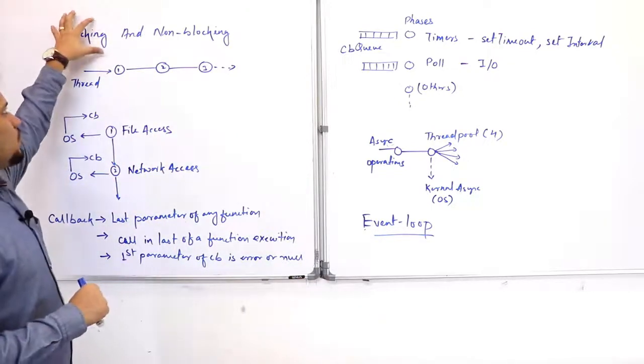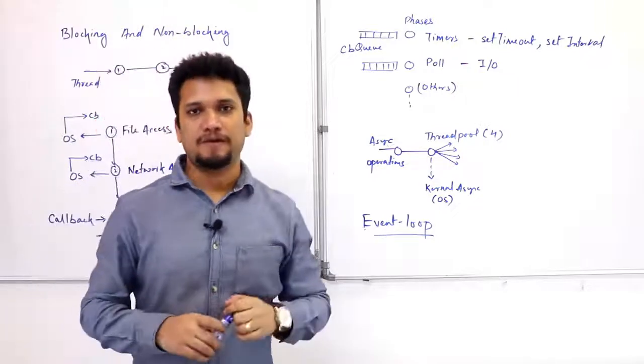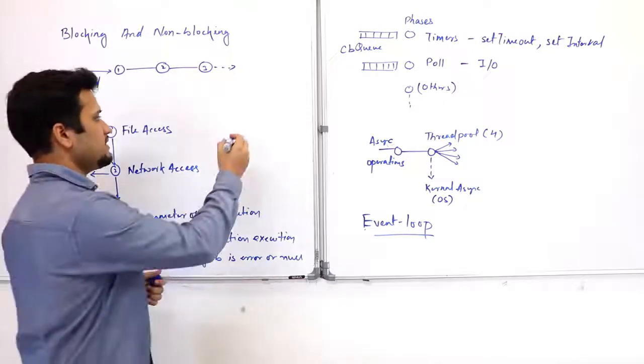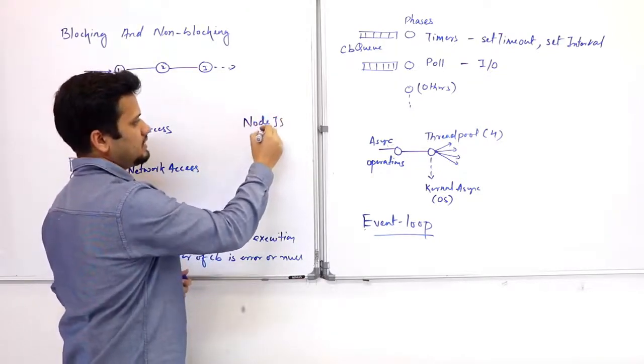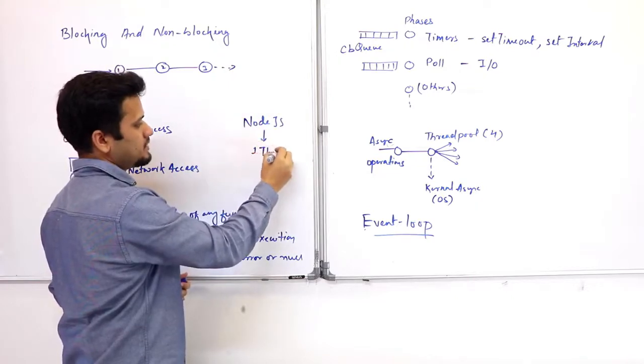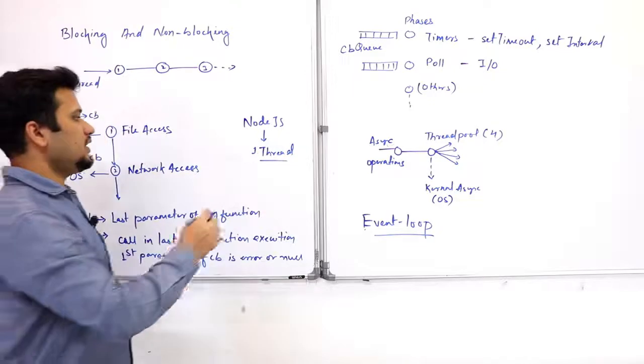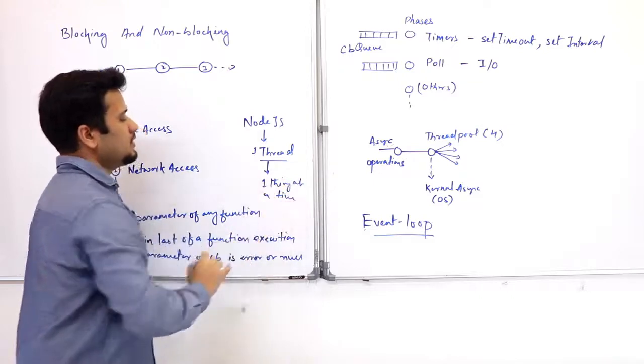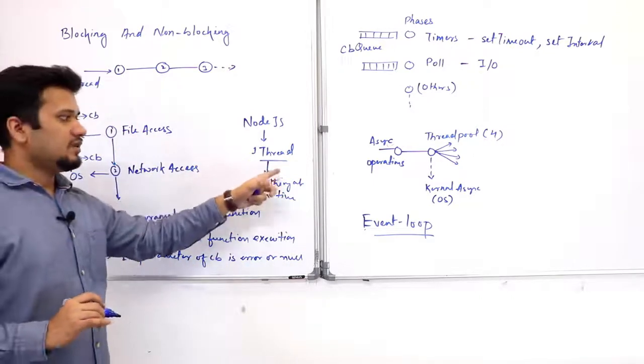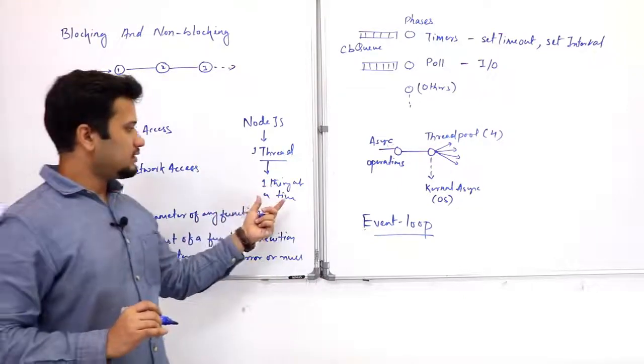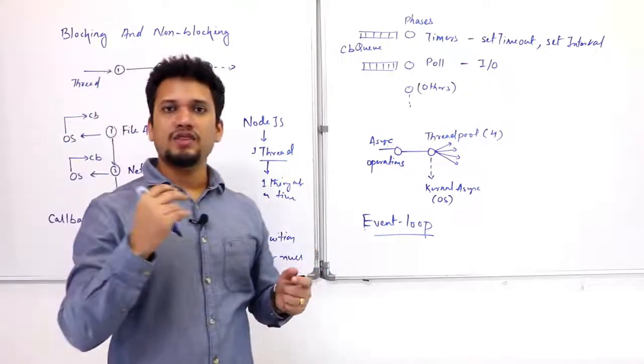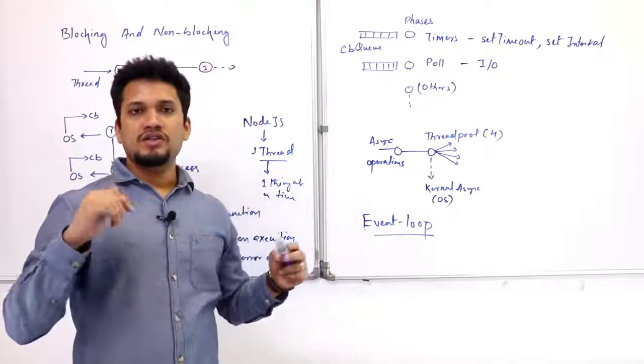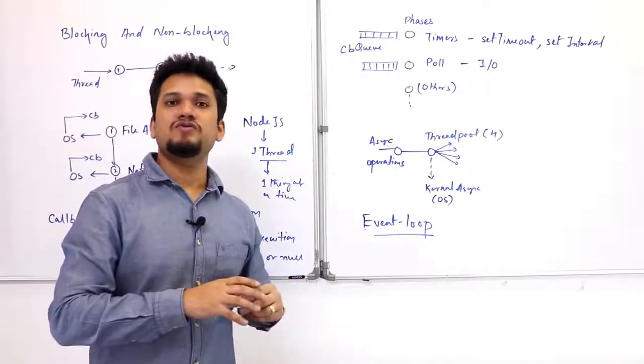First thing we need to understand is what is blocking and what is non-blocking. Your NodeJS is a single-threaded system. There is only one thread in the system, so one thread can do only one thing at a time. If it is able to do one thing at a time, then you can think that if you have like 1000 concurrent users or 100 concurrent users, then each user will have to wait when the earlier user has been served.